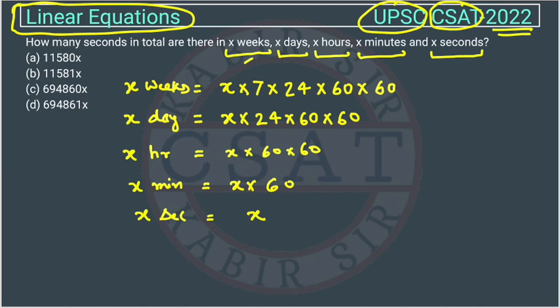Now, there is a trick - we do not need to calculate all this. If we see the options, we can see x will be common. So here, it will become 1.